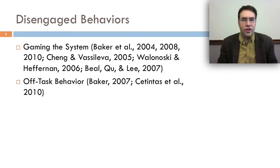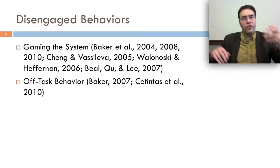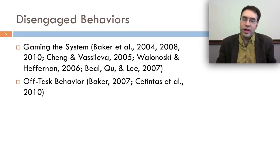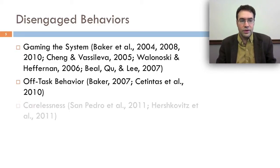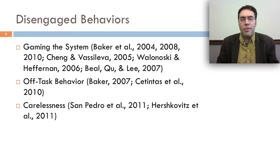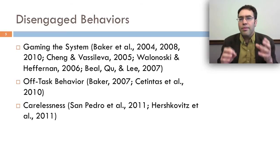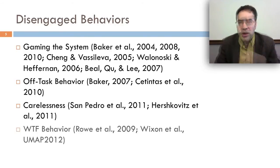Off-task behavior is another type of disengaged behavior. People can actually infer from log files whether a student who has paused is talking to their neighbor or the teacher about the math. Carelessness, or more accurately careless errors, is a student making errors that aren't due to their lack of knowledge but are due to simply not trying hard enough to get the correct answer.